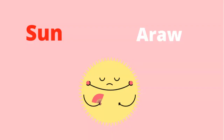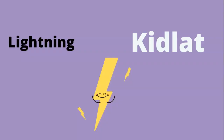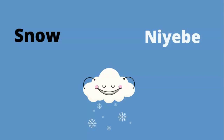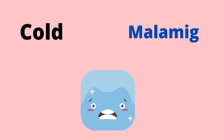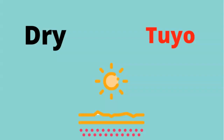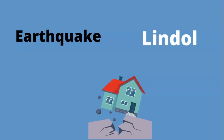Sun — Araw. Lightning — Kidlat. Snow — Nyebe. Moon — Buwan. Cold — Malamig. Dry — Toyo. Earthquake — Lindol.